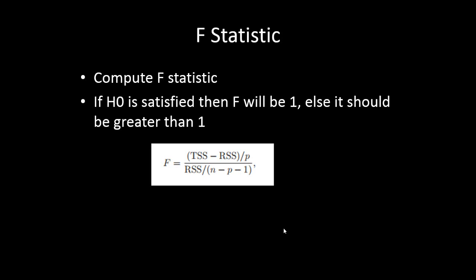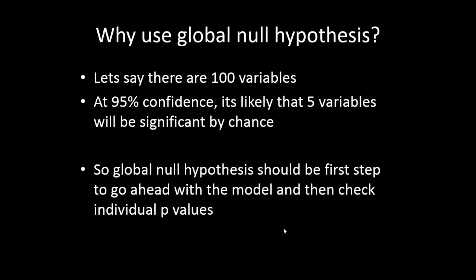Why is it so important? Why use global null hypothesis? Let's take an example to understand this. Let's say there are 100 independent variables. We all know that our confidence level is most of the time 95%. That means we are only sure about 95% of the significance level that we have found in the model.